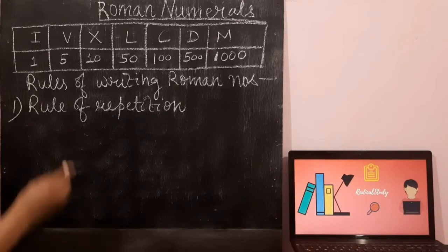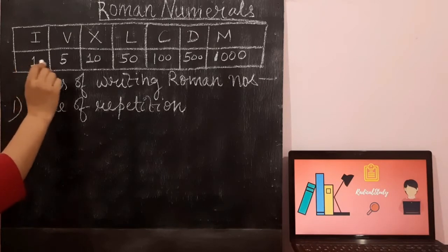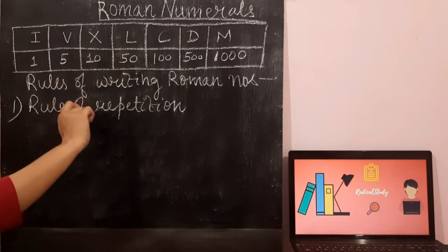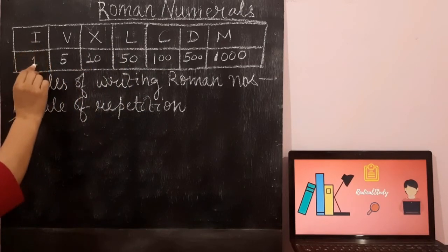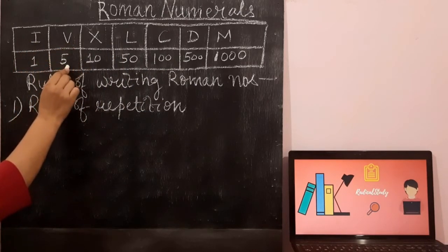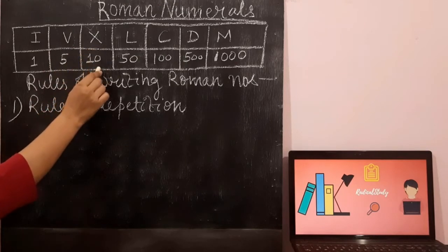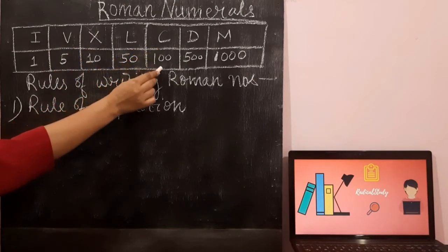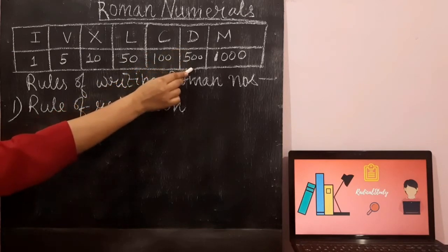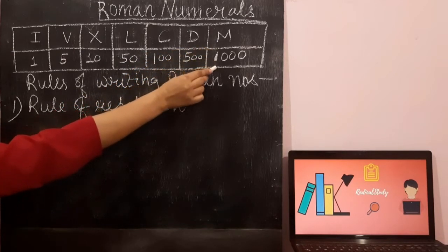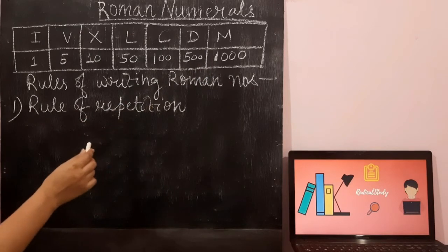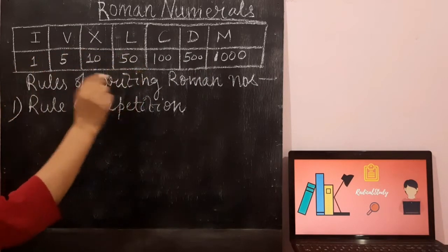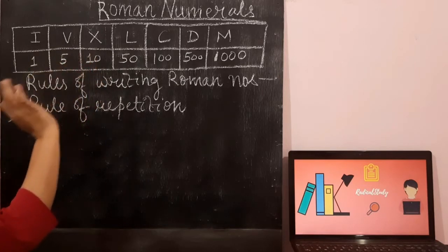As you can see on the board, I have written 7 Roman numerals. I represents 1, V represents 5, X represents 10, L represents 50, C represents 100, D represents 500, M represents 1000. There are certain rules which we follow while writing the Roman numerals, and these all Roman numerals help us to write every number.